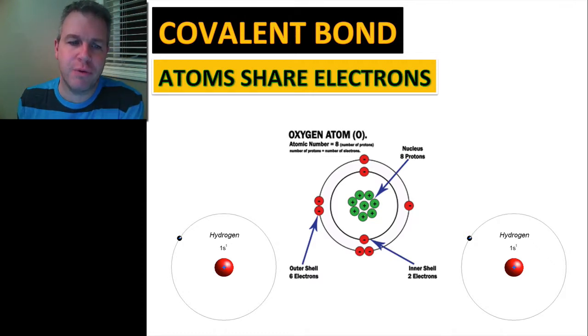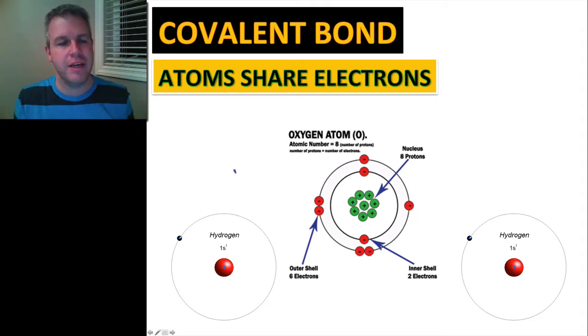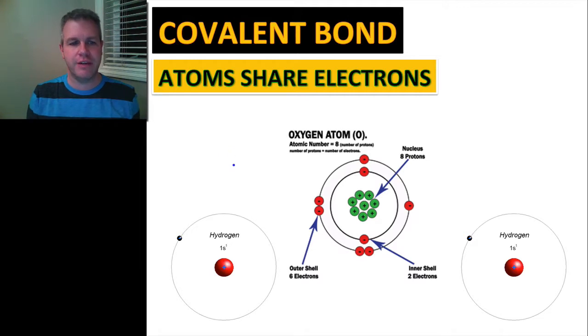The example that we're going to look at today is water. Now we know that water is made when atoms are sharing electrons, so how is this done? Well, here we have Bohr models of hydrogen and oxygen atoms, and we know that with oxygen it has a total of eight electrons in the atom, so that will put two in the innermost shell and then that's going to put six in the outermost shell.